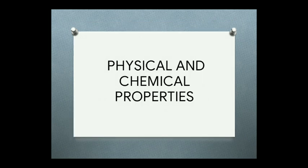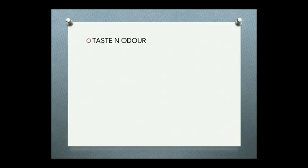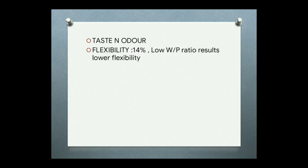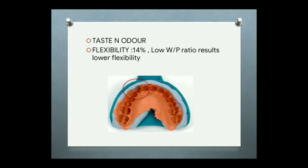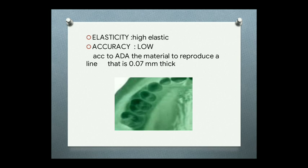Regarding physical and chemical properties of alginate: alginate has a pleasant taste and odor. Flexibility is the highest at 14 percent; flexibility may be lower when the water-to-powder ratio is lower. Flexibility is important because when taking an impression in undercut areas, the set alginate can be removed easily without breaking. Alginate is highly elastic but has low accuracy — according to the American Dental Association, the material must reproduce a line 0.07 mm thick, which alginate cannot achieve.